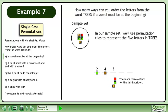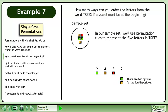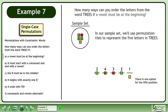There are three options for the third position, two options for the fourth position, and one option for the fifth position. Multiply the numbers together to get 48 arrangements.